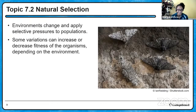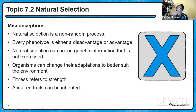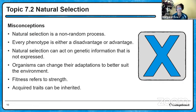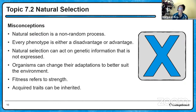A couple of misconceptions to erase: Natural selection is a non-random process - that is a misconception; it is absolutely random. Another misconception is that every phenotype is either an advantage or a disadvantage. Sometimes some phenotypes are just neutral, meaning they don't provide an advantage or disadvantage, which means natural selection really won't act on those neutral phenotypes. And natural selection can act on genetic information that's not expressed - wrong. Phenotype has to be expressed in order for natural selection to act upon it.